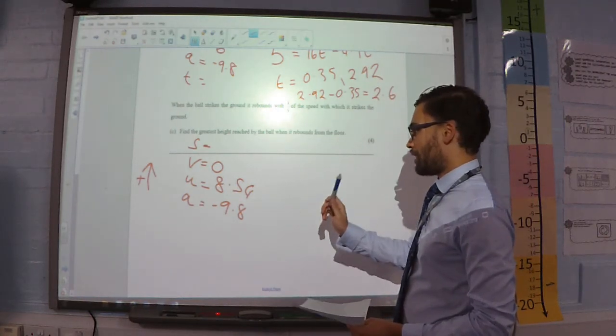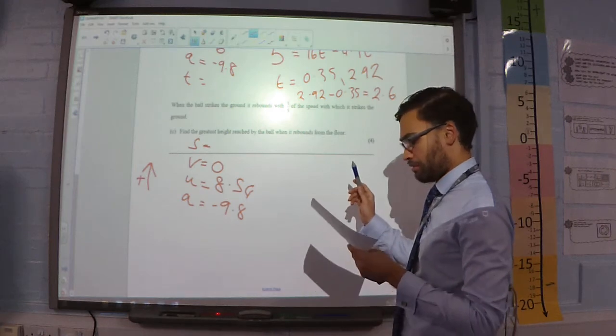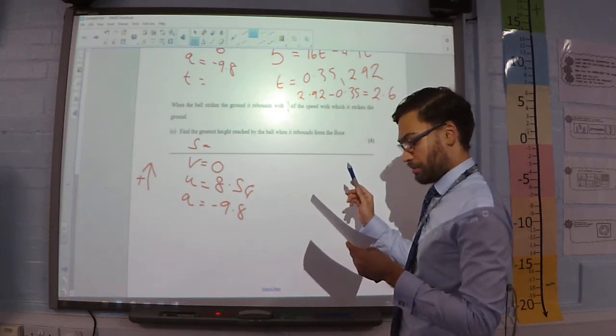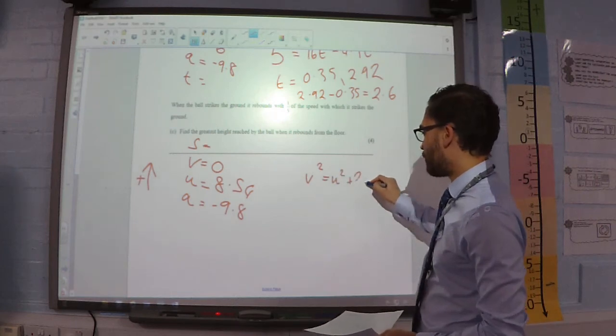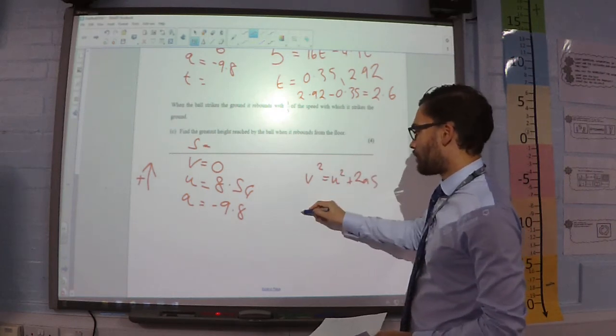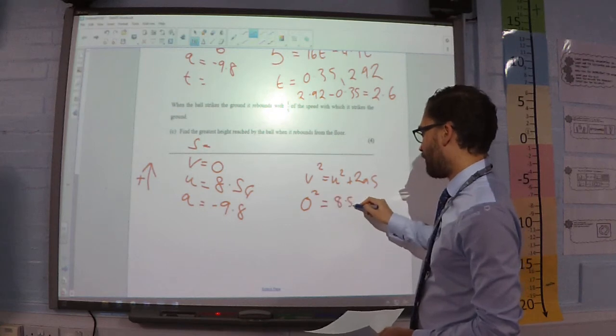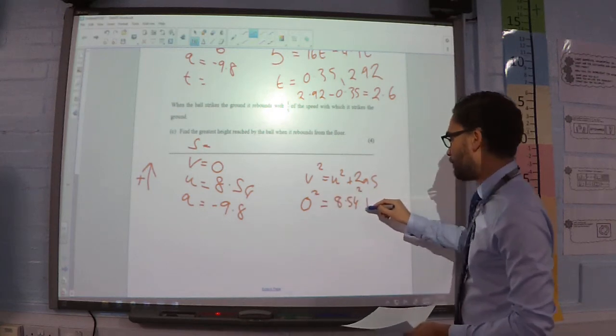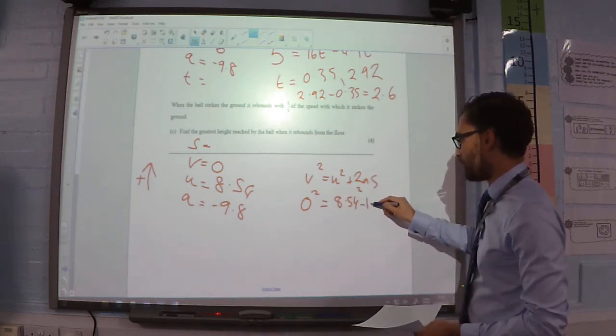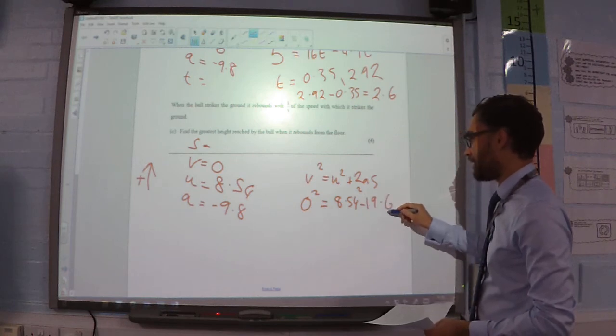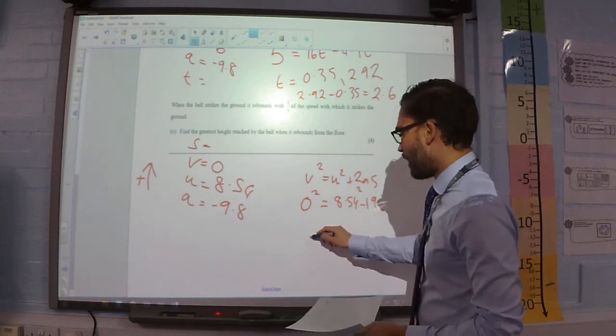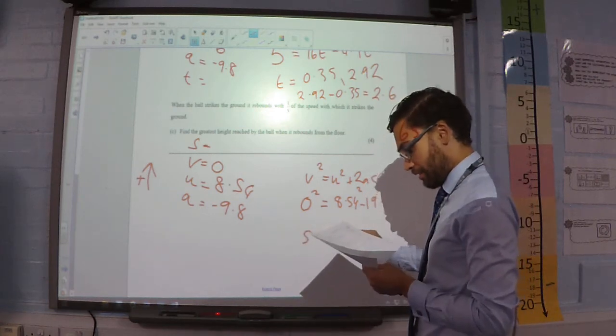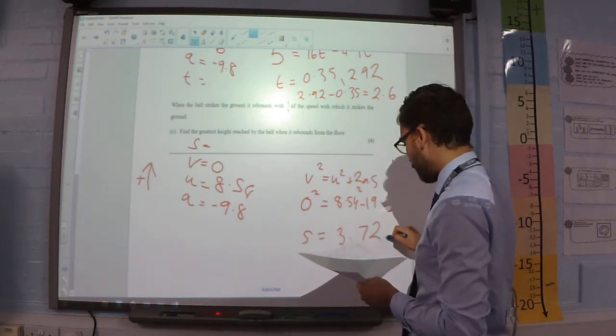So, S, V, U and A. Which formula is that? That's going to be V squared equals U squared plus 2AS. So, 0 squared is equal to 8.54 squared minus 19.6 times by S. Rearrange that and we will get that S is 3.72 meters.